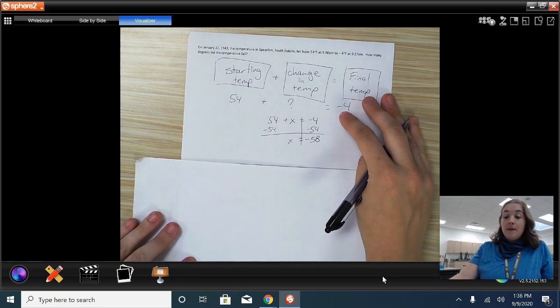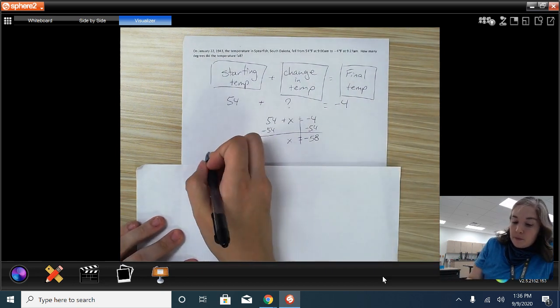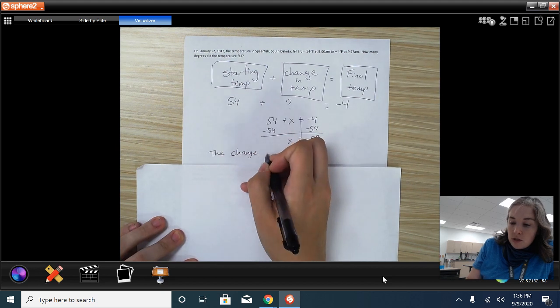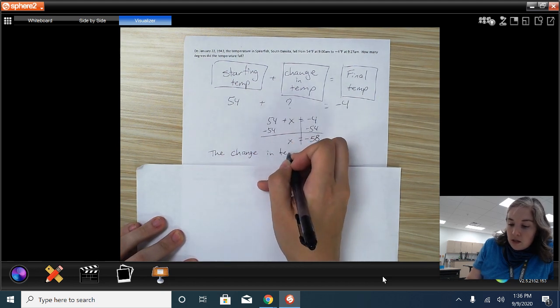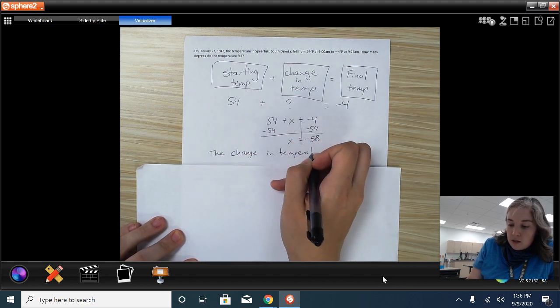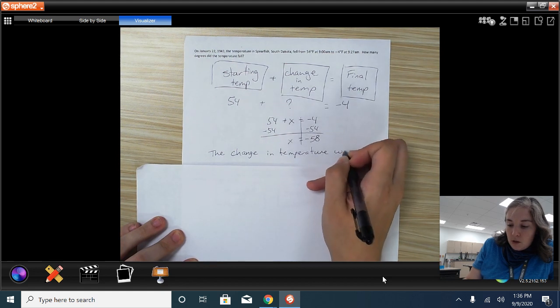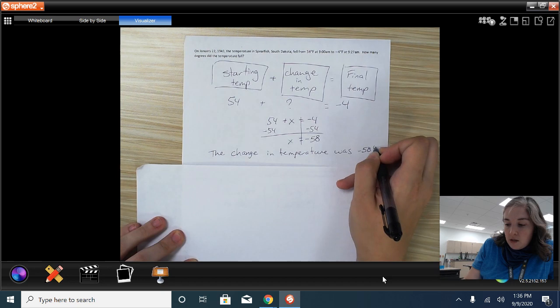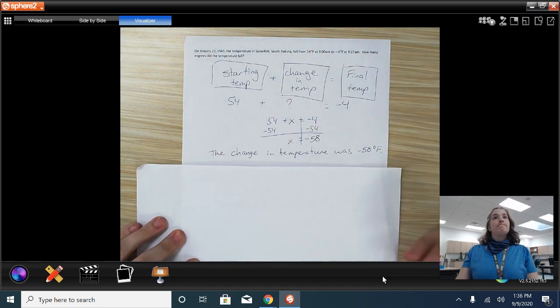So then, because it's a word problem, we need a sentence. So the change in temperature was negative 58 degrees Fahrenheit. There we go.